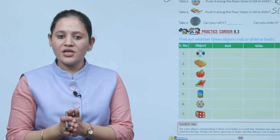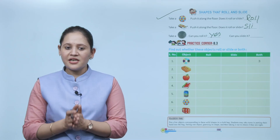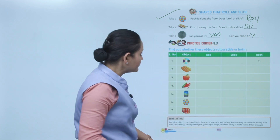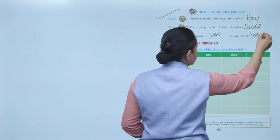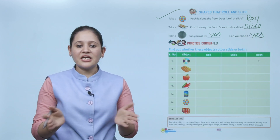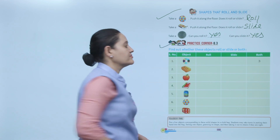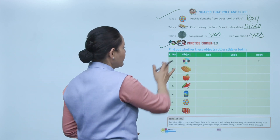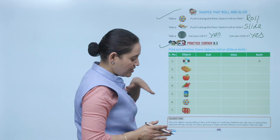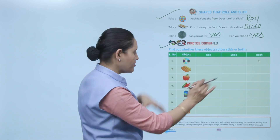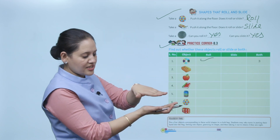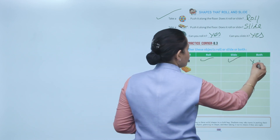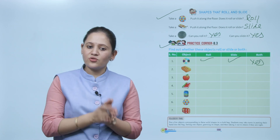Take a coin — can you roll it? Yes. Can you slide it? Yes. So a coin can both roll and slide. Practice corner 8.3: find out whether these objects roll or slide or both. A CD is a circular object, so it can roll; it can also slide. So it can both roll and slide.